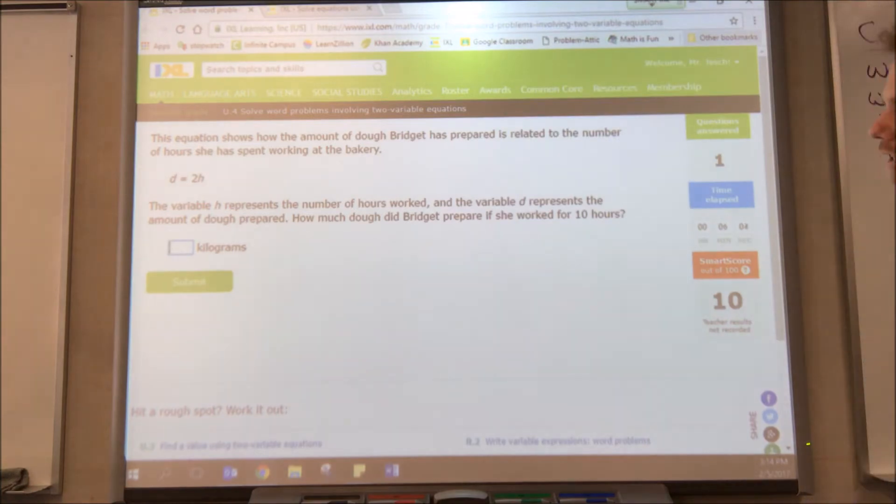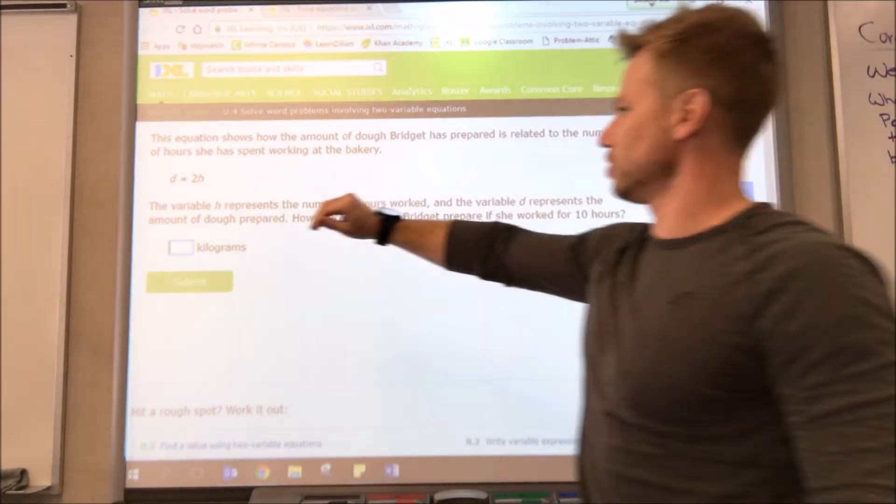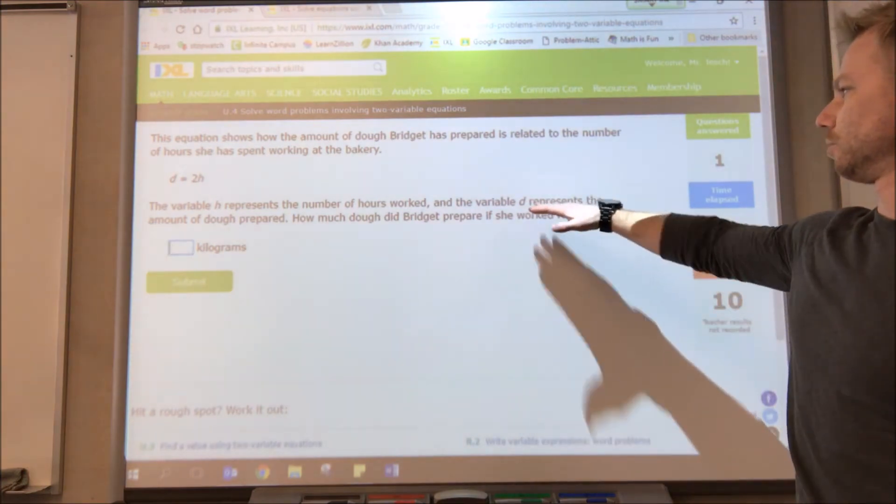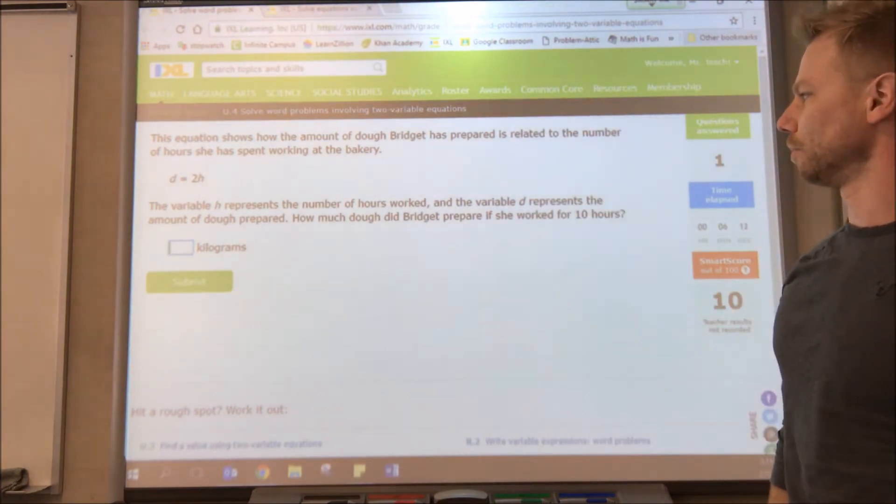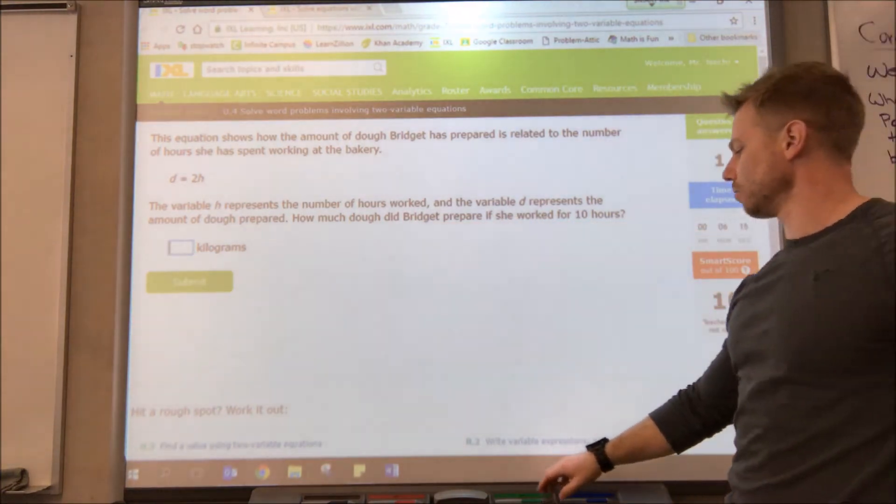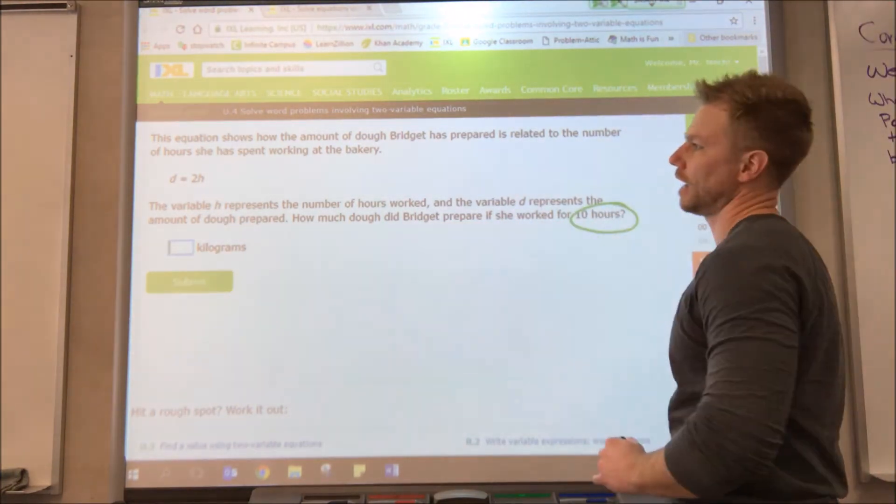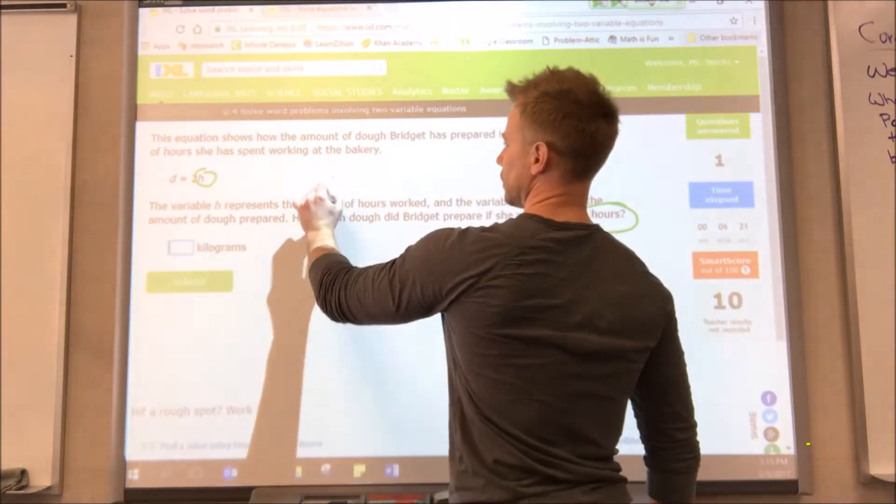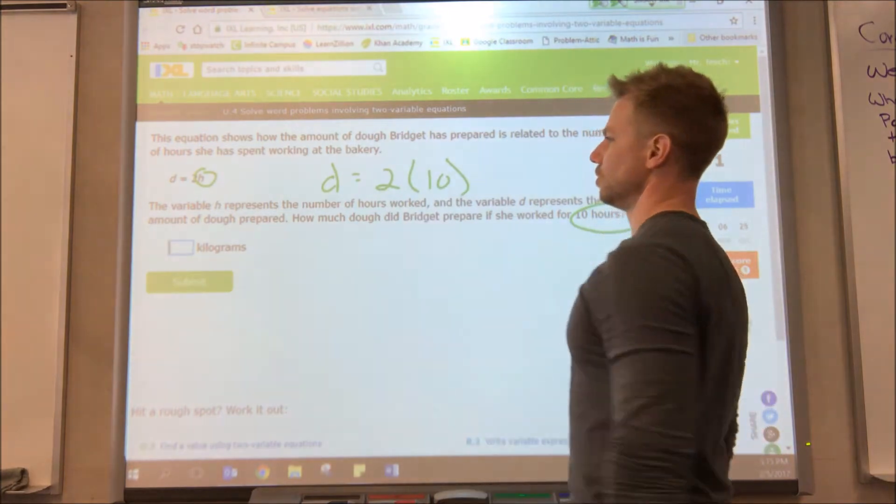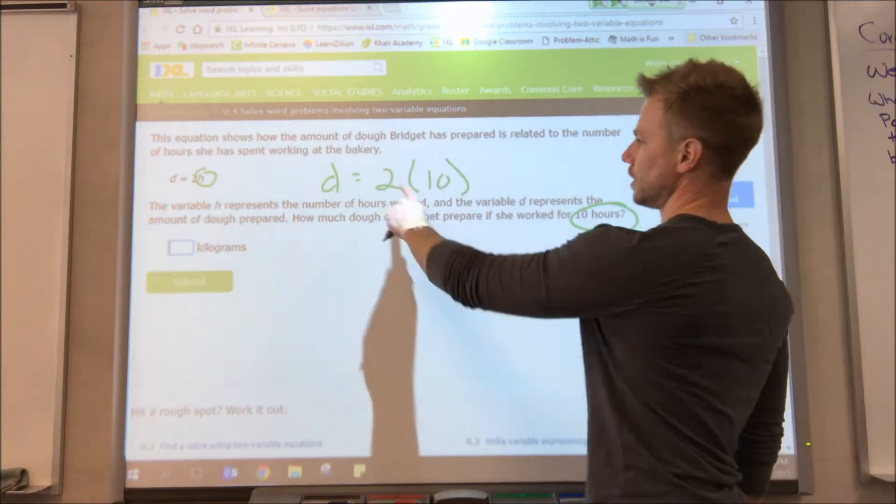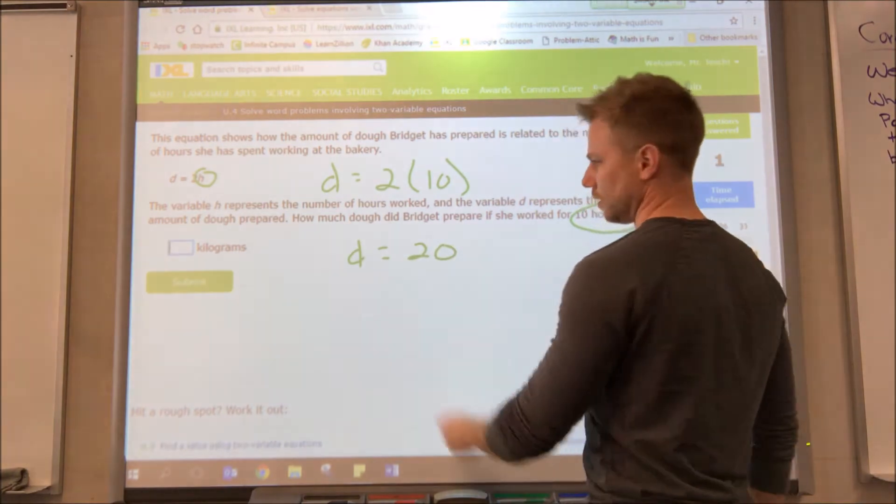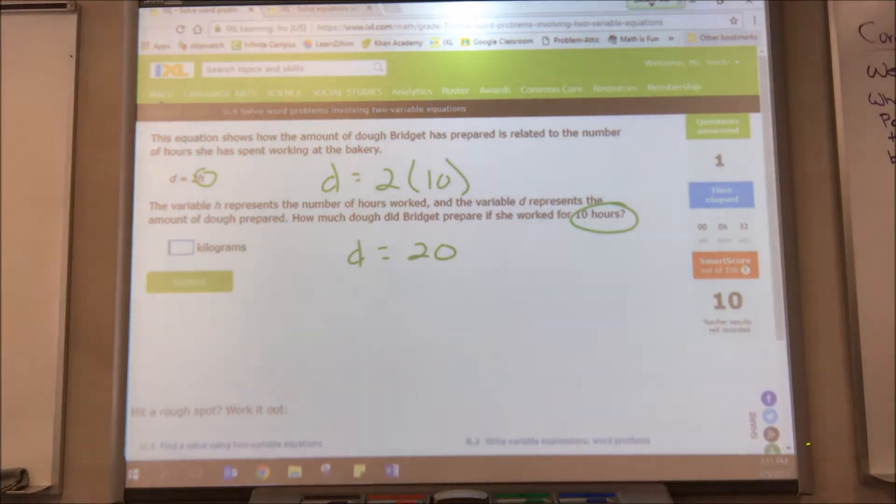Let's try a couple more. We have our equation again. The variable h represents the number of hours worked, the variable d represents the number of dough prepared. How much dough did Bridget prepare if she worked for 10 hours? We have 10 hours, that's going to go in place of h because they told us that's what h stands for. So we're going to substitute in place of h, we put the number 10. 2 times 10 is 20, so we plug in our answer of 20.